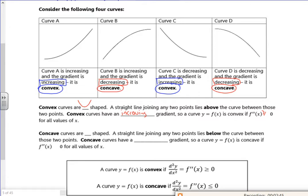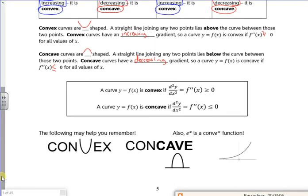Now if I try and put curves B and D together, I get that shape there. So a concave has got a decrease in gradient. Which means that would be less than or equal to zero for all values. And that's how the example wants us to remember our convex and concave. The second differential is greater than or equal to zero for convex, and the second differential is less than or equal to zero for concave.